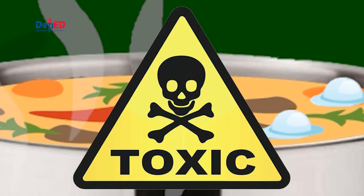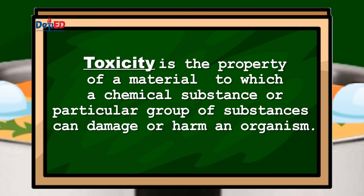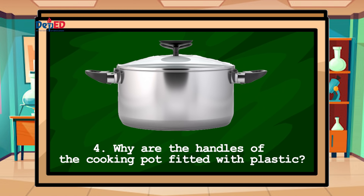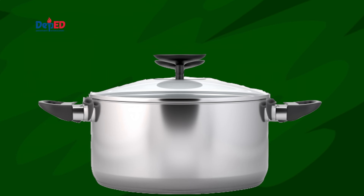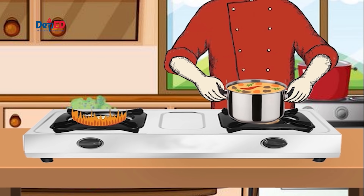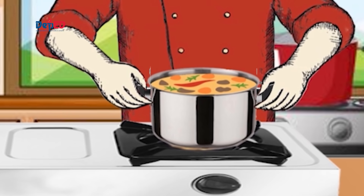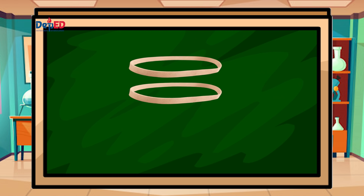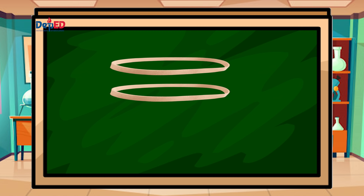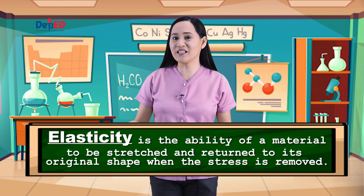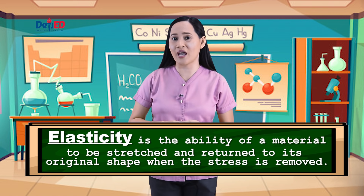It is important to use safe cookware when preparing food. Toxicity is the property of a material by which a chemical substance or a particular mixture of substances can damage or harm an organism. For question number four: Why are the handles of the cooking pot fitted with plastic? The poor thermal conductivity of plastic is the reason — heat cannot easily pass through plastic. In some cooking pots, rubber is used. Aside from being a good insulator, rubber also has the ability to be stretched and return to its original shape when the stress is removed, a property called elasticity.